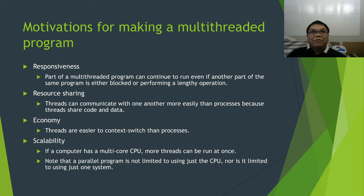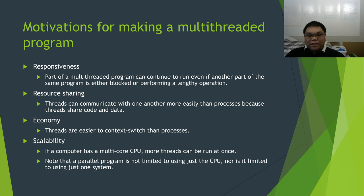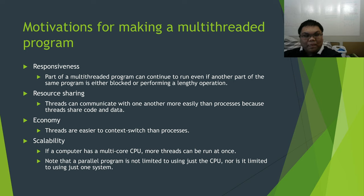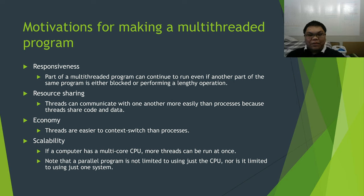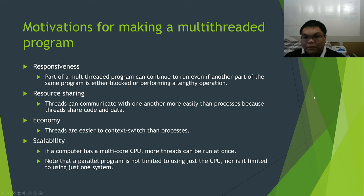When you have a process executing on a CPU, it takes some time to switch that process out for a different process. Threads are easier to context switch than processes. You can scale up in one of two ways: you can add more powerful hardware to your computer, or if that's not enough, add more computers. At that point the computers have to be connected over a network, and that's when using OpenMP is literally not enough — we'll look at MPI later on.